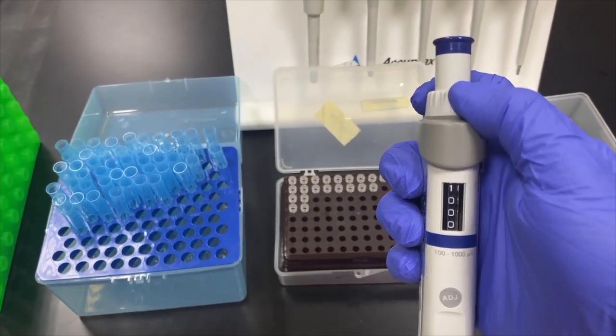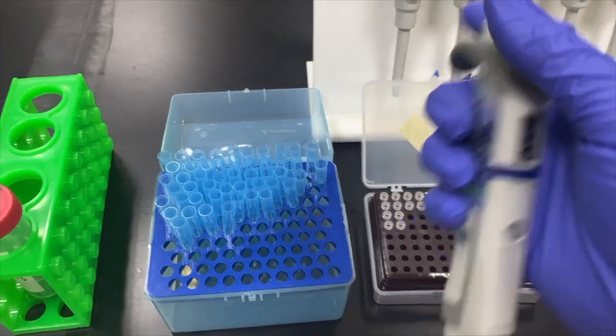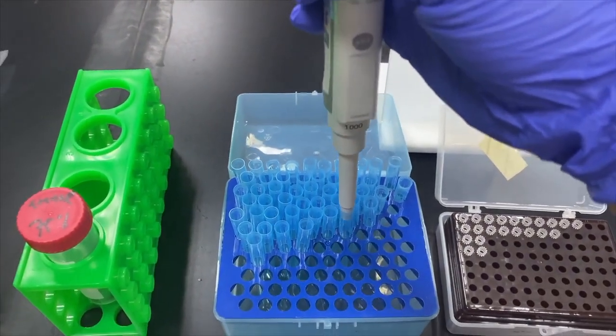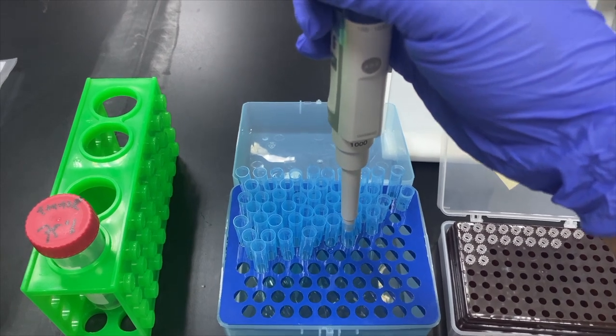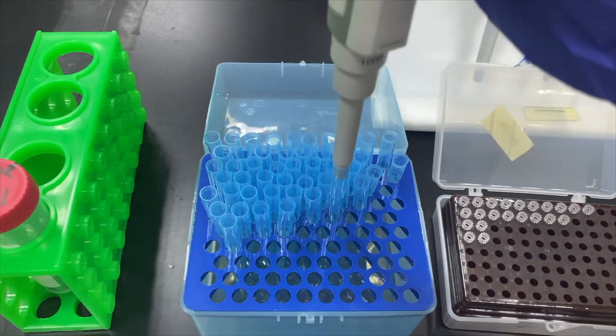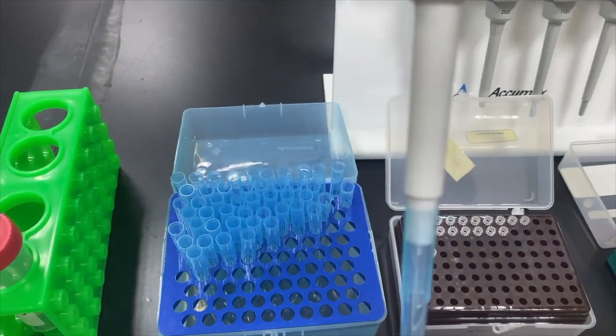So, if you want to have 1000 microliter, this already set to 1000. And then you just put the edge of the micropipette into the proximal part of the tips. You just press it so it will not loose.